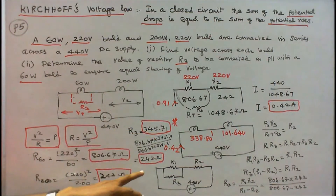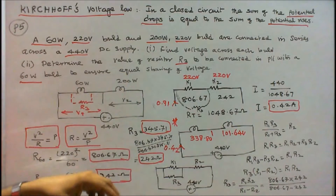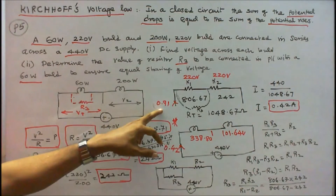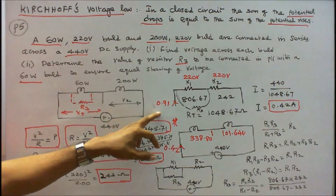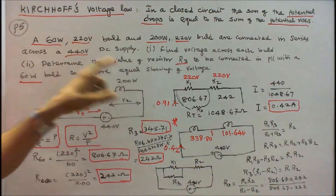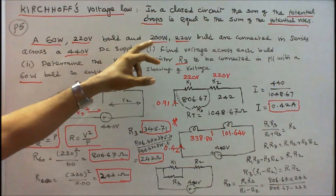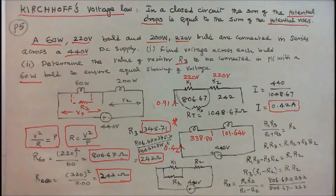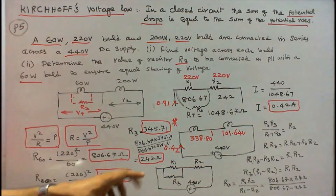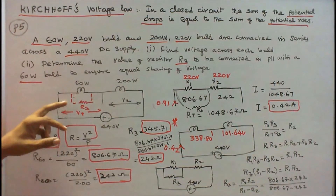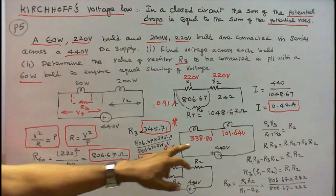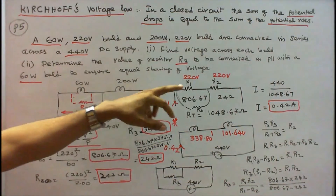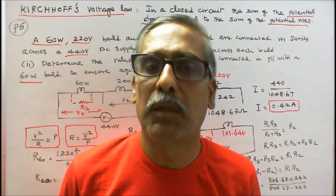Now the total resistance changes to 242 + 242 = 484 ohms. Current becomes 440 / 484 = 0.91 amps. Initially the current was 0.42 amps; after connecting R3, the current is 0.91 amps. The voltage across the 60W bulb becomes 220V, and the voltage across the 200W bulb is also 220V. 220 + 220 = 440V. The resistance R3 is 345.71 ohms. Without R3 the voltage was 338.80V (60W bulb too bright) and 101.64V (200W bulb dim); with R3, voltages become equal. With this I conclude my lecture. Thanks for listening.